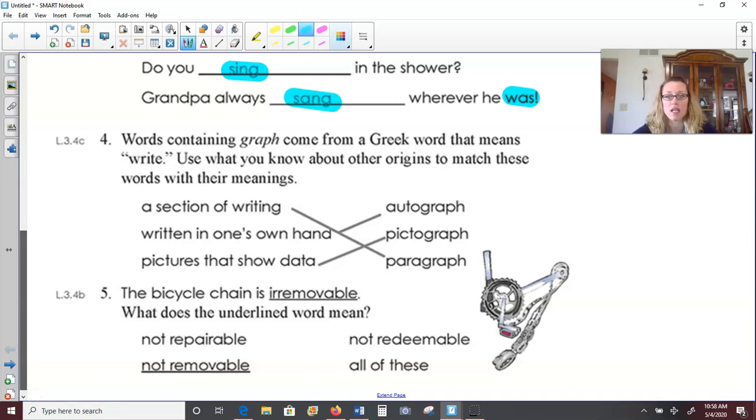Number four, words containing graph come from a Greek word that means write. Use what you know about other origins to match these words with their meaning. So graph means to write. Like a homograph is a word that, two words that are written the same. We've seen the word autograph, pictograph, and paragraph before at school. So a section of writing, we would call that a paragraph. So when we're writing a story, a section of writing is a paragraph.